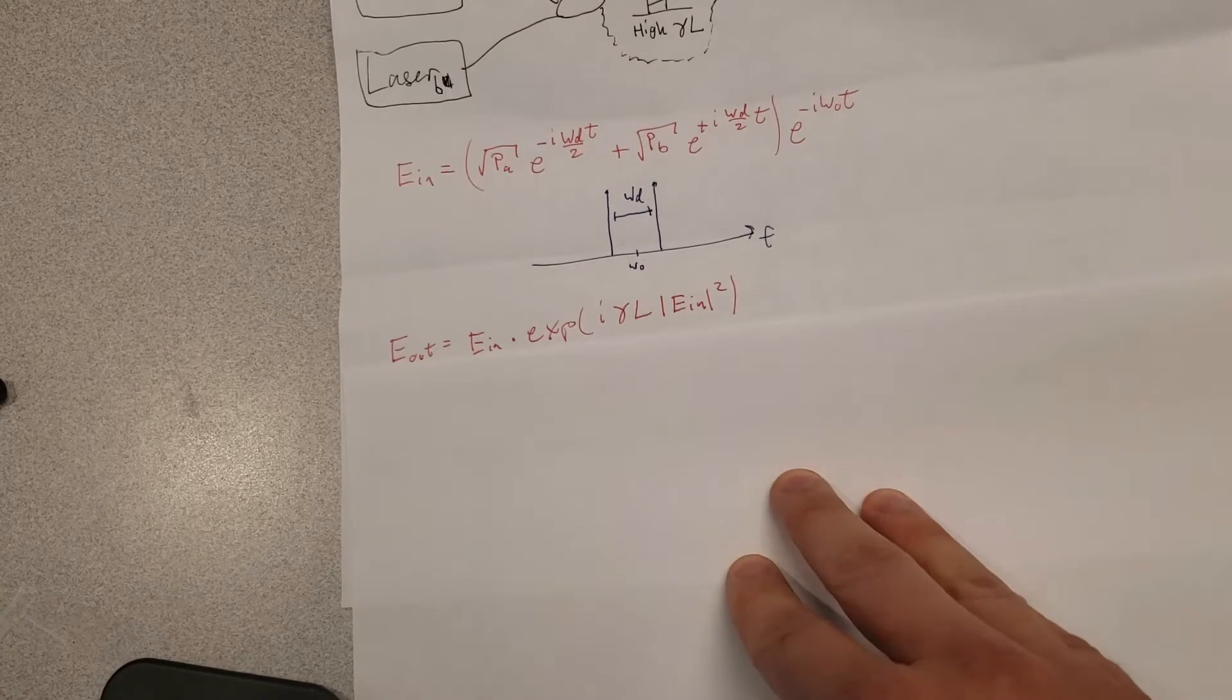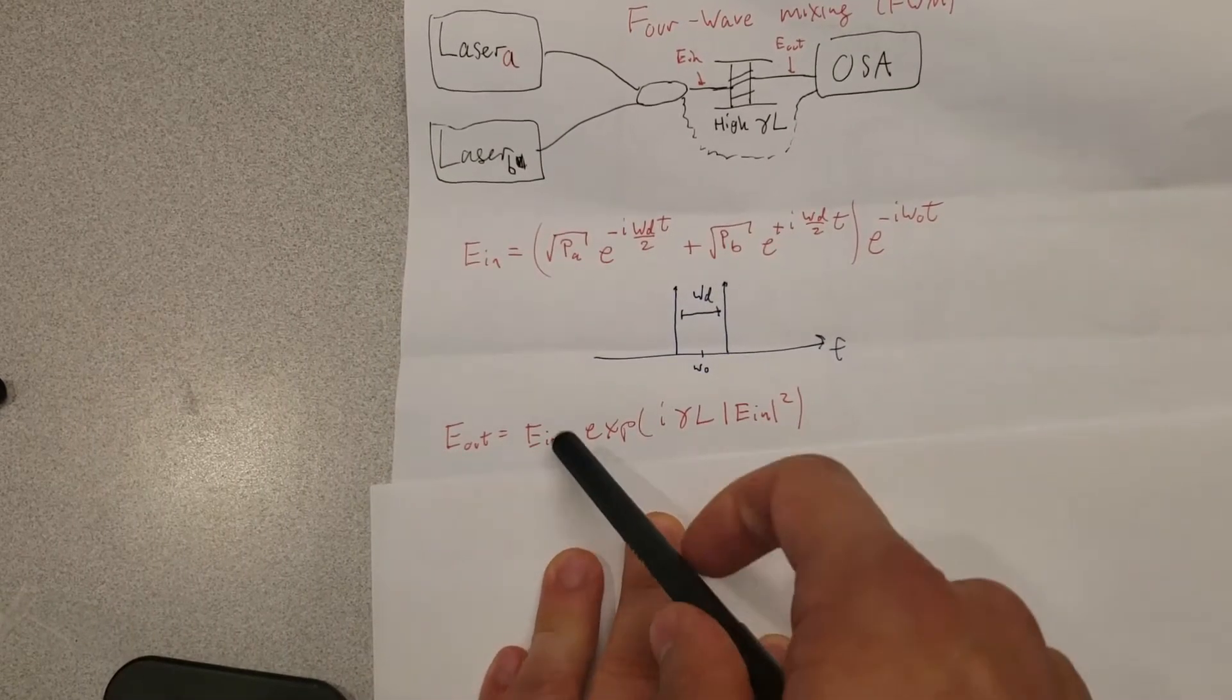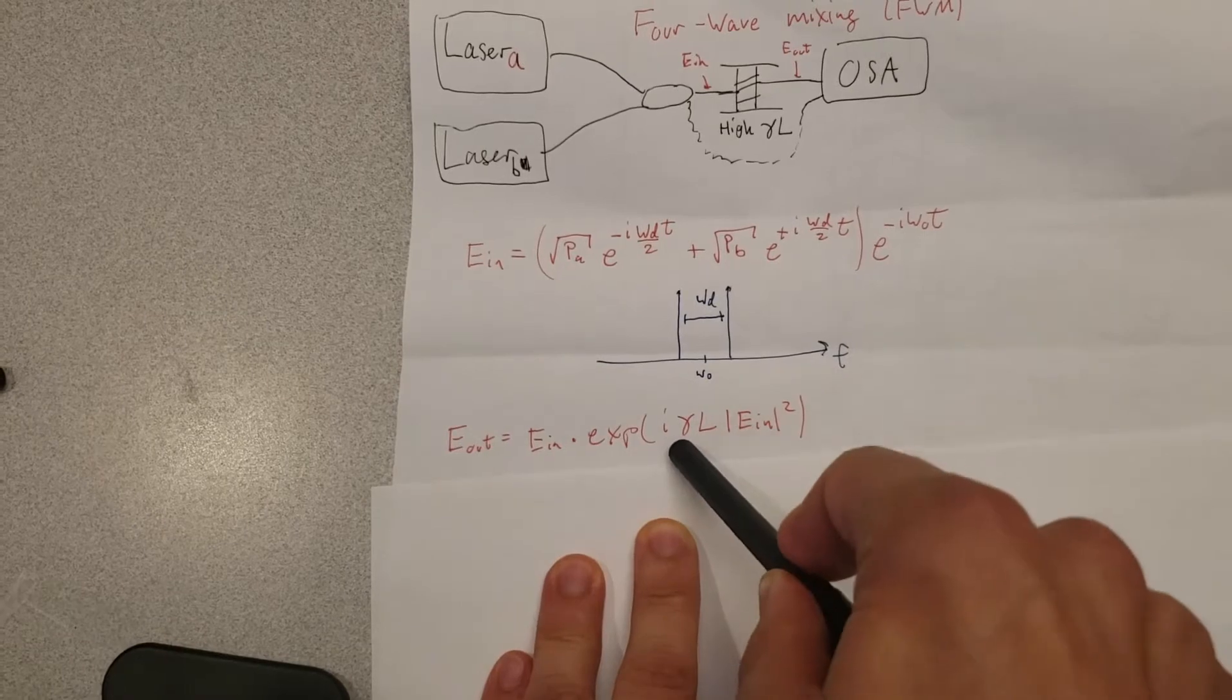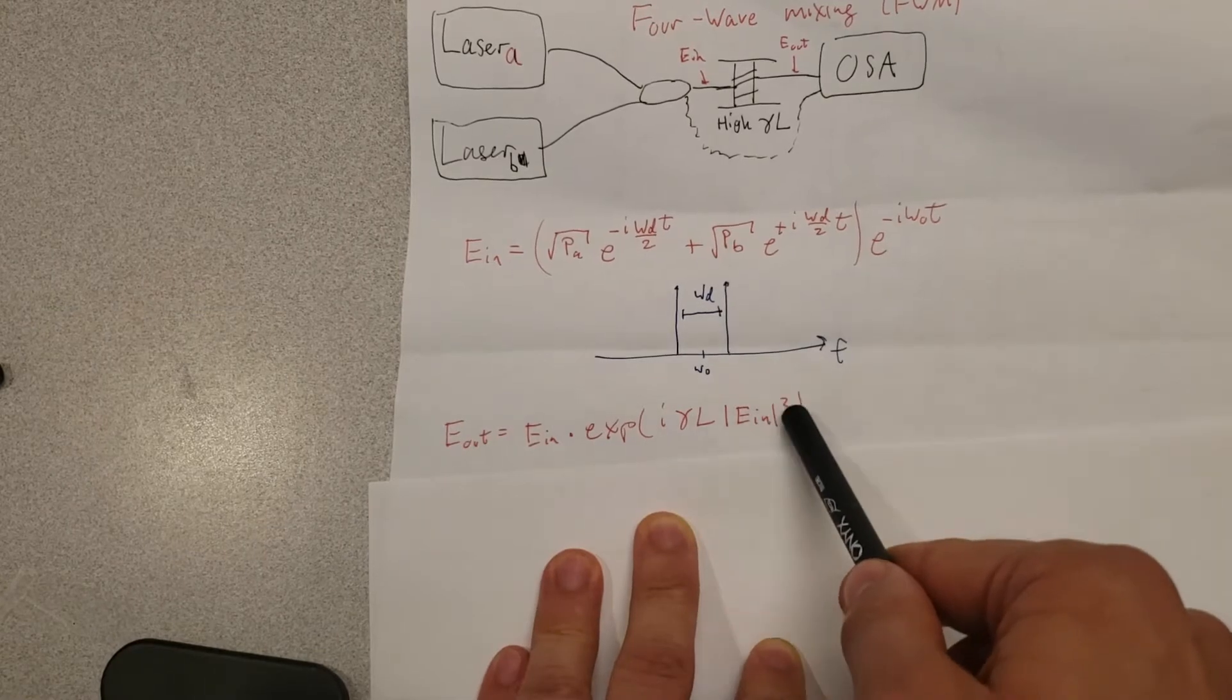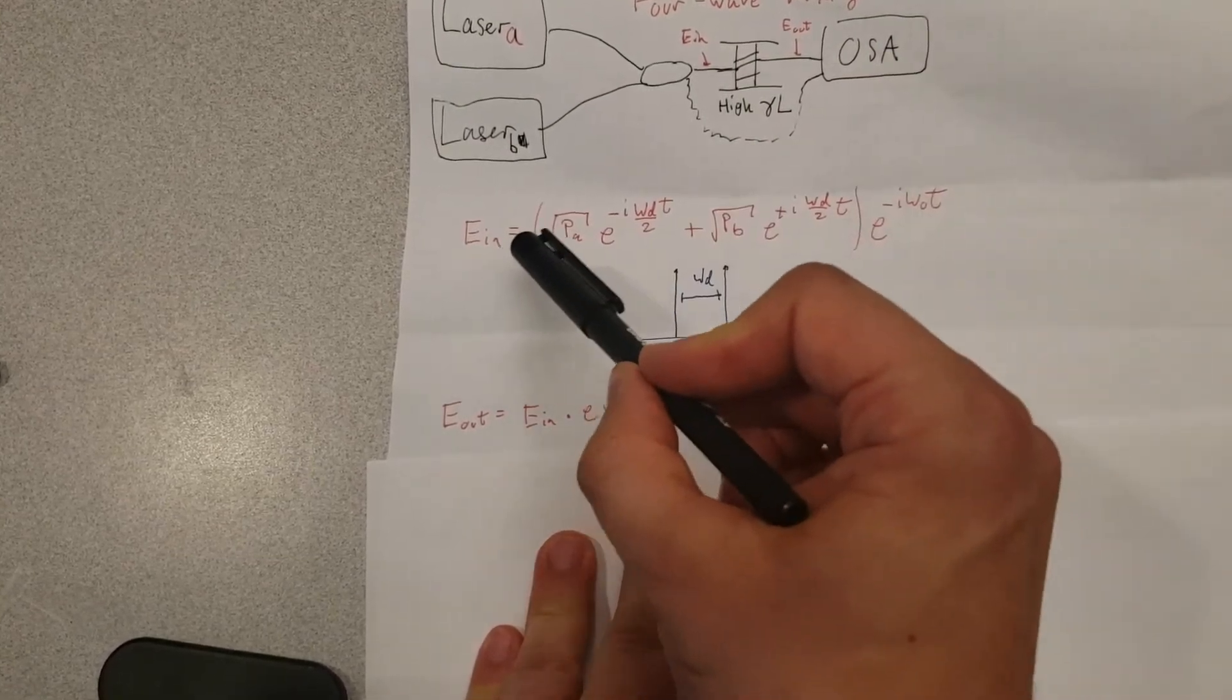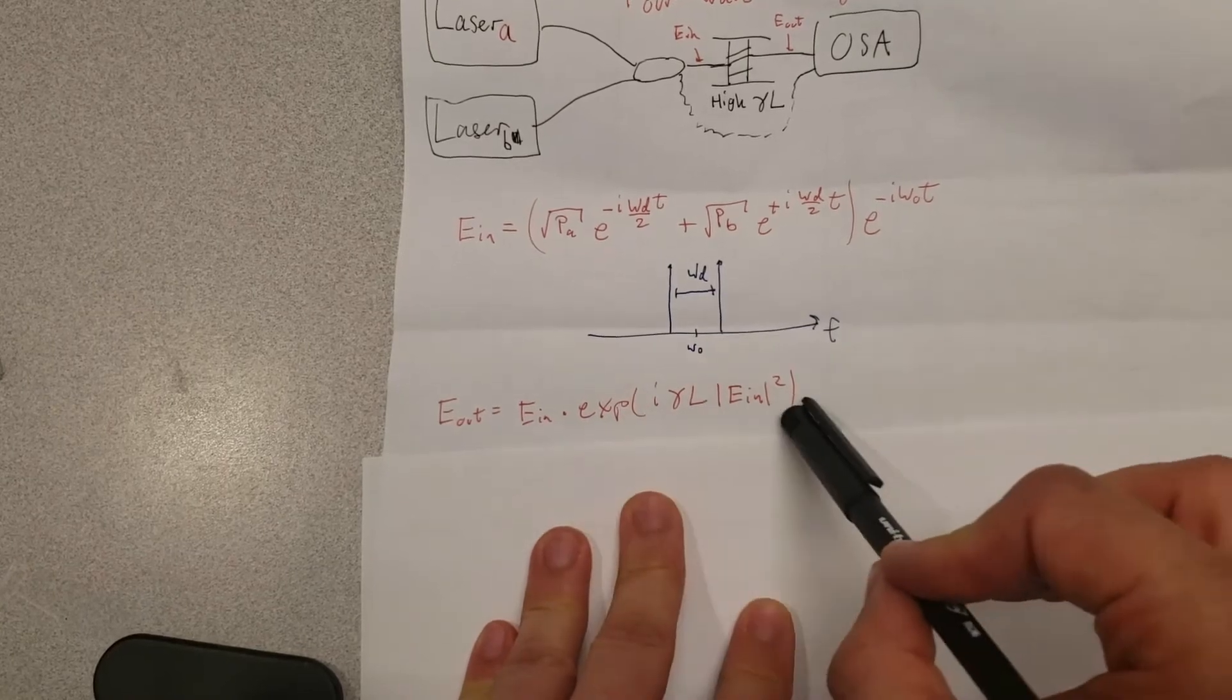Let's think about what the output field is going to look like. Because we have a highly non-linear fiber, we're going to get a phase modulation of the incident signal. So the output signal is going to be the input signal multiplied by a complex exponential where the phase depends on the gamma parameter, the inherent linearity, the length of the medium, as well as the power of the electric field. The phase modulation on the incident field will depend on the power of that field.